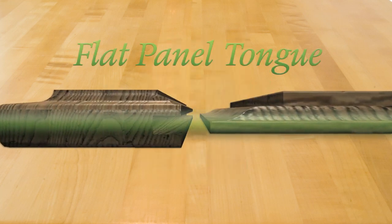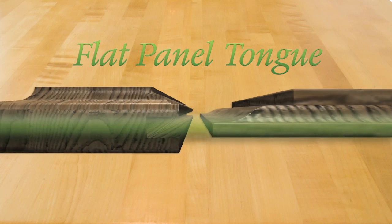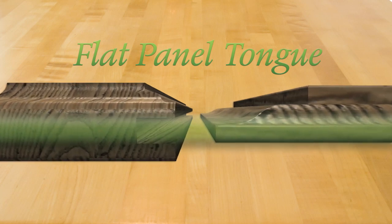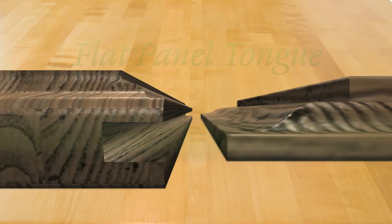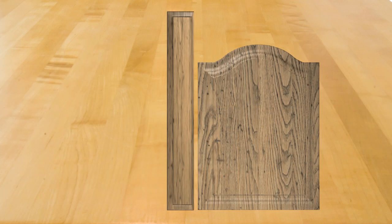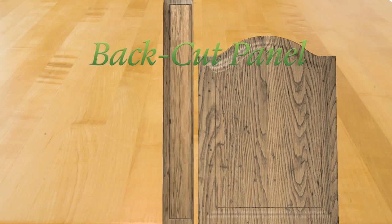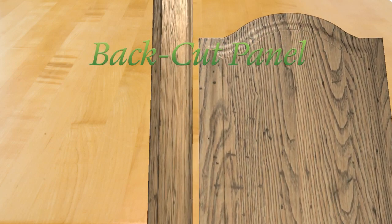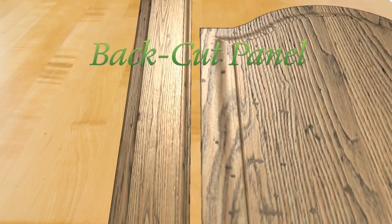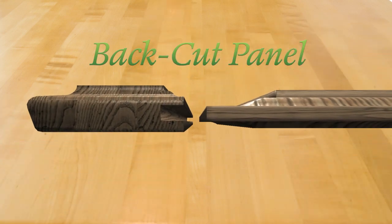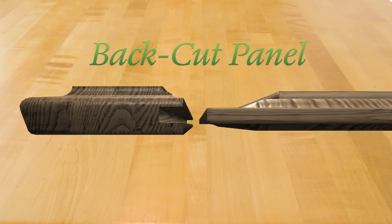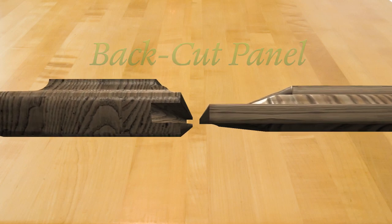It's important for the panel to have a flat tongue to allow for wood movement. The tongue thickness is usually 1/4 inch, which corresponds to the width of the groove made by the pattern bit. Panel thickness affects whether the panel can be machined in one or two setups. 5/8 inch thick panels require only one setup to machine the face of the panel. Thicker panels require a second operation to make a back cut on the back of the panel.